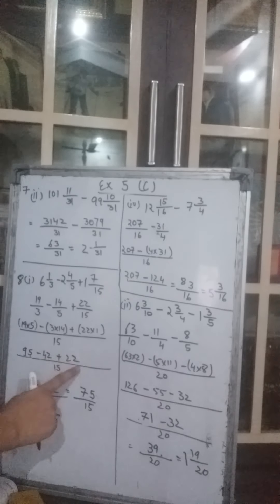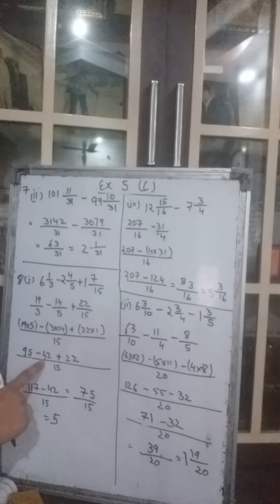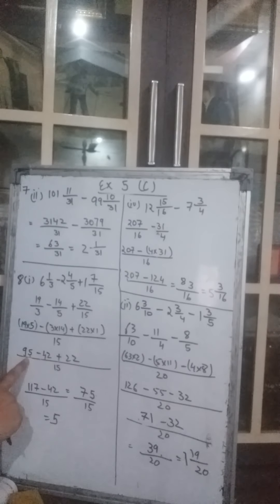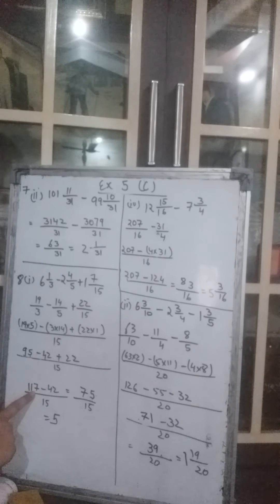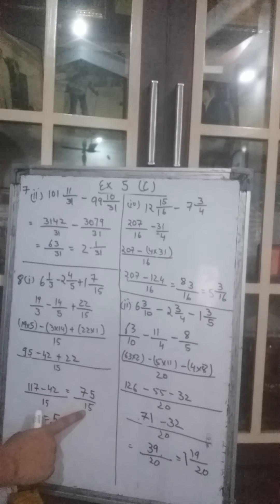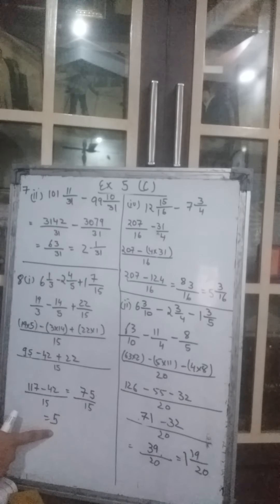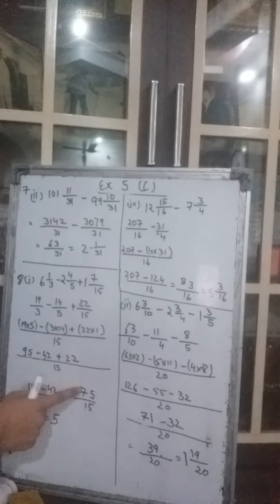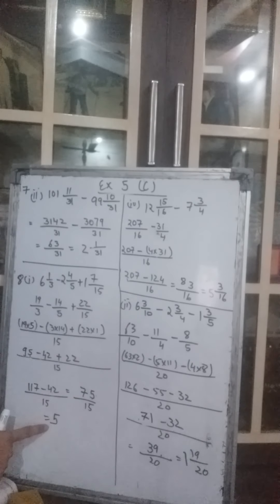Now we have to apply BODMAS, otherwise your answer will go wrong. According to BODMAS, addition takes place first. So 95 is with plus sign and 22 is with plus sign — first add these two, then minus takes place. So 95 plus 22 gives you 117 minus 42 gives you 75 upon 15. The answer: you will simplify, giving 5.